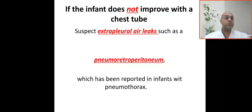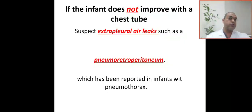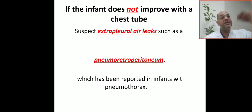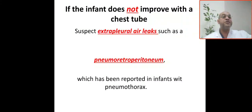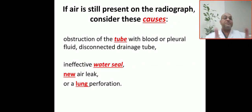If the baby is not improving after chest tube insertion, suspect extra-pleural air leaks such as pneumoretroperitoneum. If the baby does not improve after chest tube, consider extra-pleural air leaks — the air may be in the retroperitoneum, called pneumoretroperitoneum, which has been reported in infants with pneumothorax.